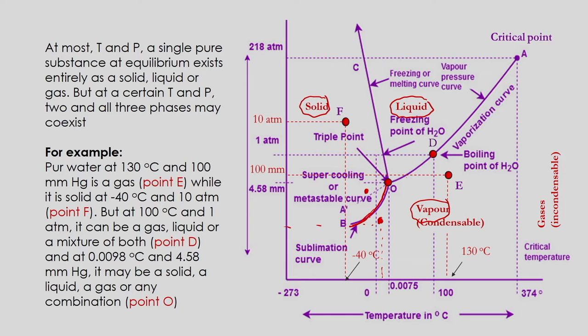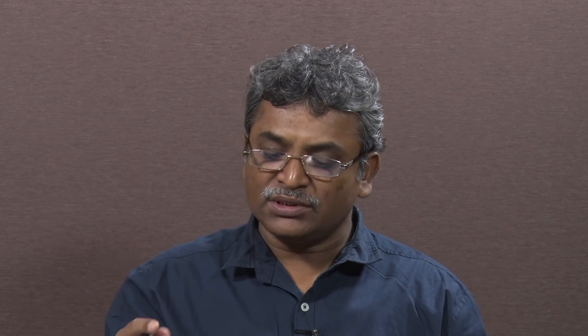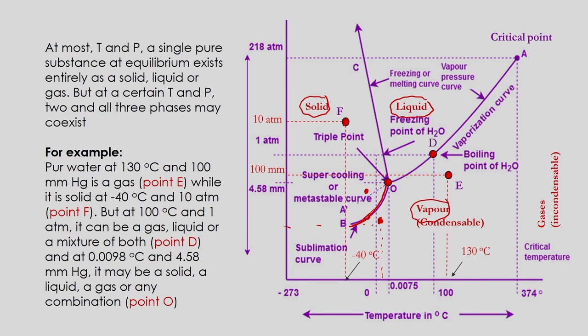Consider the phase diagram for the water-vapor system. If we take point F at minus 40 degrees Celsius and 10 atmospheres pressure, water becomes solid. Along this boundary line — vapor to solid — at minus 40 degrees Celsius, water vapor converts to solid (ice).